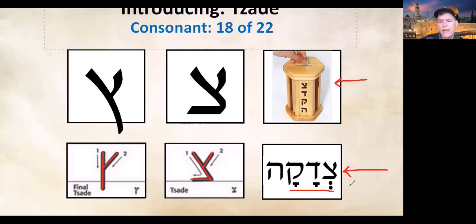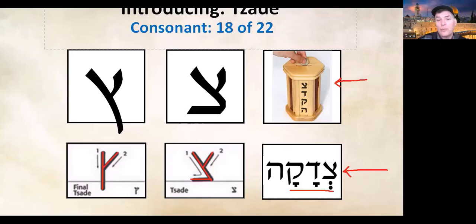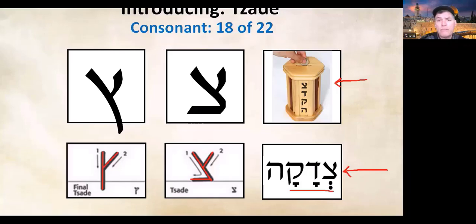Tzedakah is how you would pronounce that. On Shabbat, Jewish people can't carry money — it is forbidden to carry because that is a violation of the Torah — and so they will have to give at other opportune times in terms of giving monies to their synagogue. That being said, we're going to move on now to our next letter.